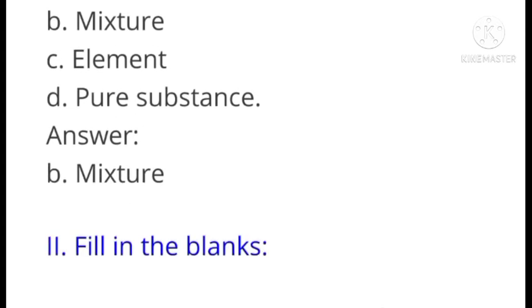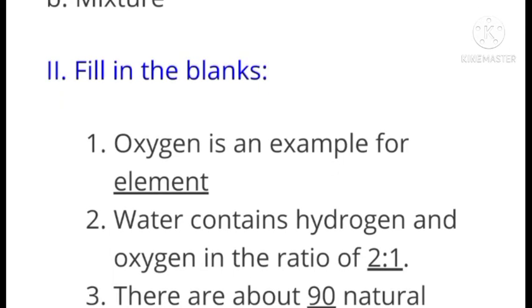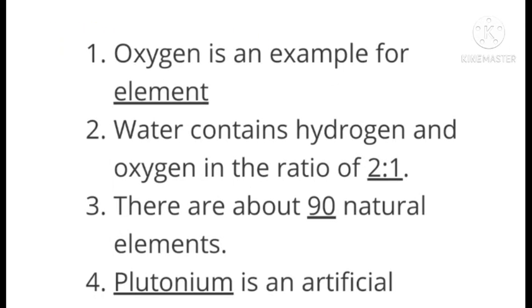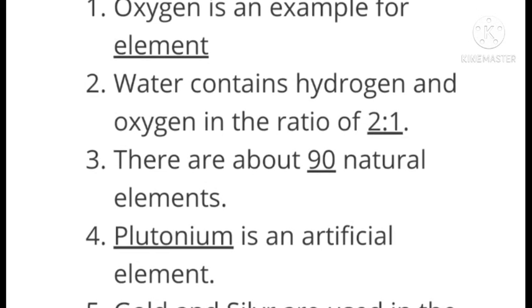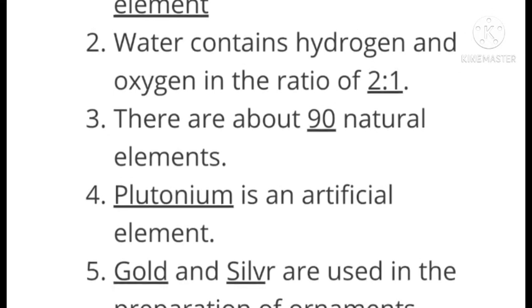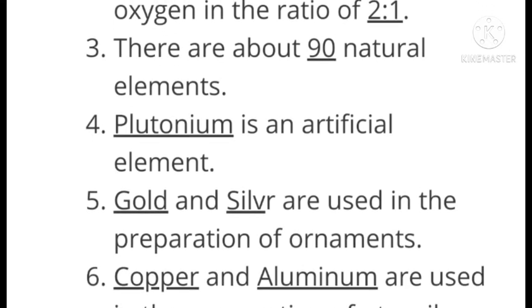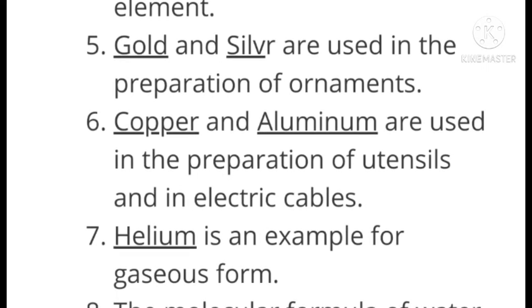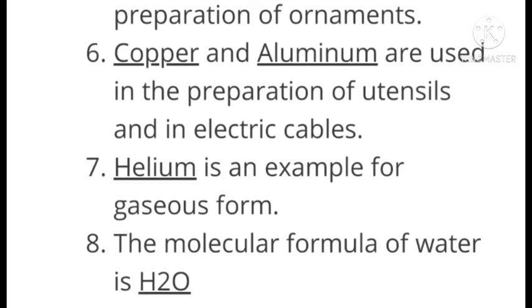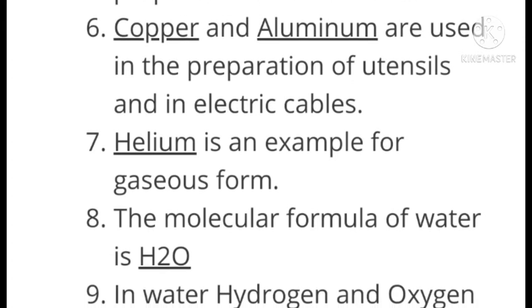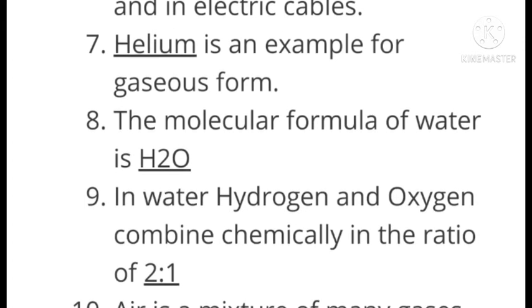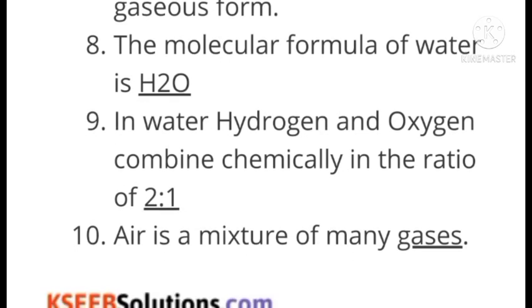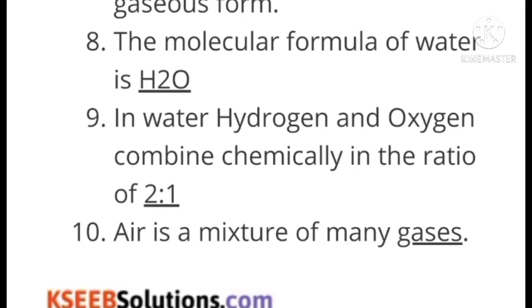Fill in the blanks: Oxygen is an example for element. Water contains hydrogen and oxygen in the ratio of 2:1. There are about 90 natural elements. Plutonium is an artificial element. Gold and silver are used in the preparation of ornaments. Copper and aluminum are used in the preparation of utensils and in electric cables. Helium is an example of a gaseous element. The molecular formula of water is H₂O. In water, hydrogen and oxygen combine chemically in the ratio of 2:1. Air is a mixture of many gases.